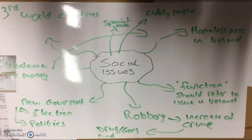Some of the social issues around us were homelessness in Ireland, elderly people being alone or unsafe in their own homes. We also looked at the project completed last year which would have a second function — whatever I make should refer to an issue in Ireland. Another issue raised was robbery, the increase of crime and drug gangs in local areas, an imbalance of money which contributes to homelessness in Ireland, third world countries, and the new government election — all popular topics at this time.